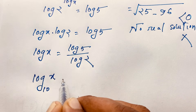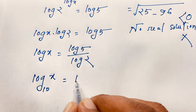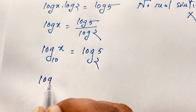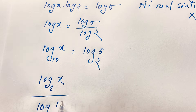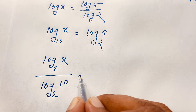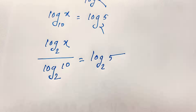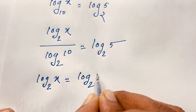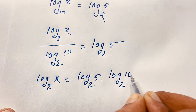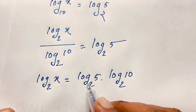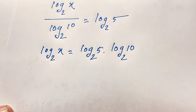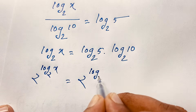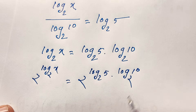We can express this as: log base 10 of x equals log base 2 of 5. Using change of base manipulations, this means log base 2 of x equals log base 2 of 5 times log base 2 of 10. Multiplying both sides by log base 2 of 10, then raising 2 to the power of both sides: 2 to the power log base 2 of x equals 2 to the power of (log base 2 of 5 times log base 10 of 2).